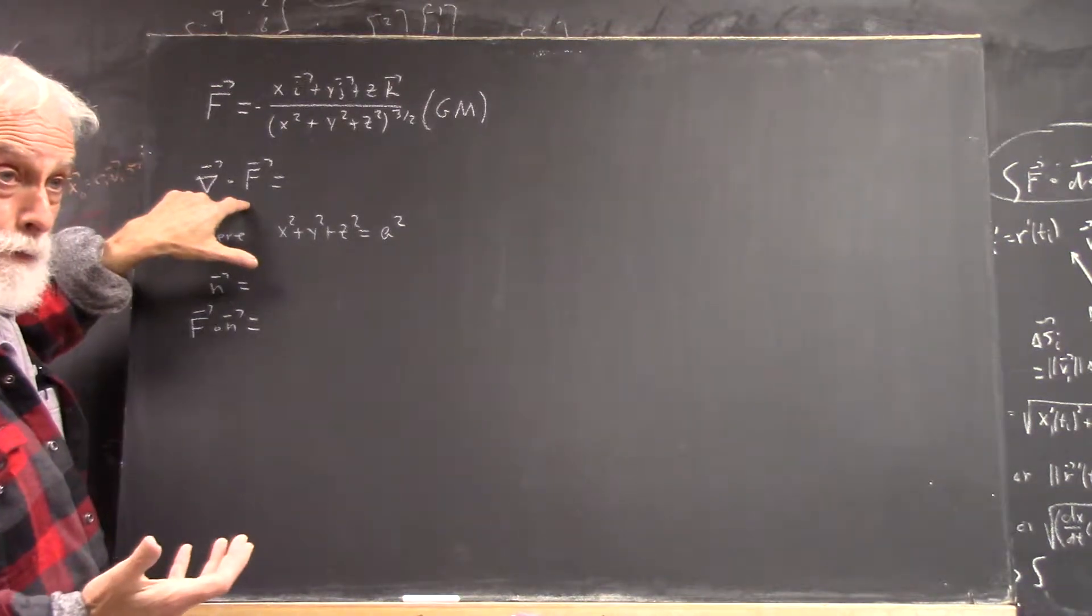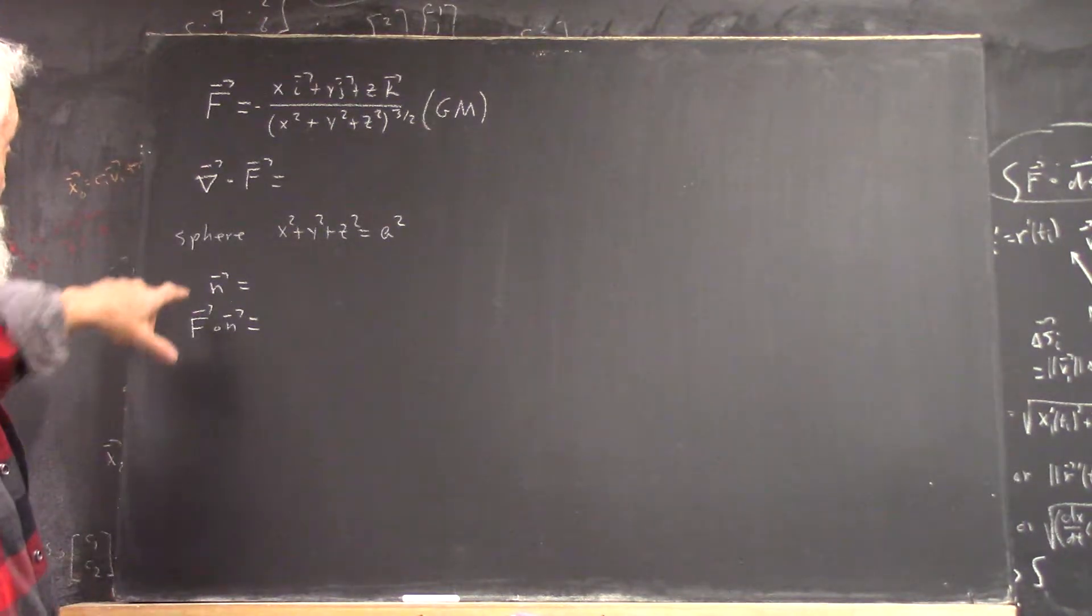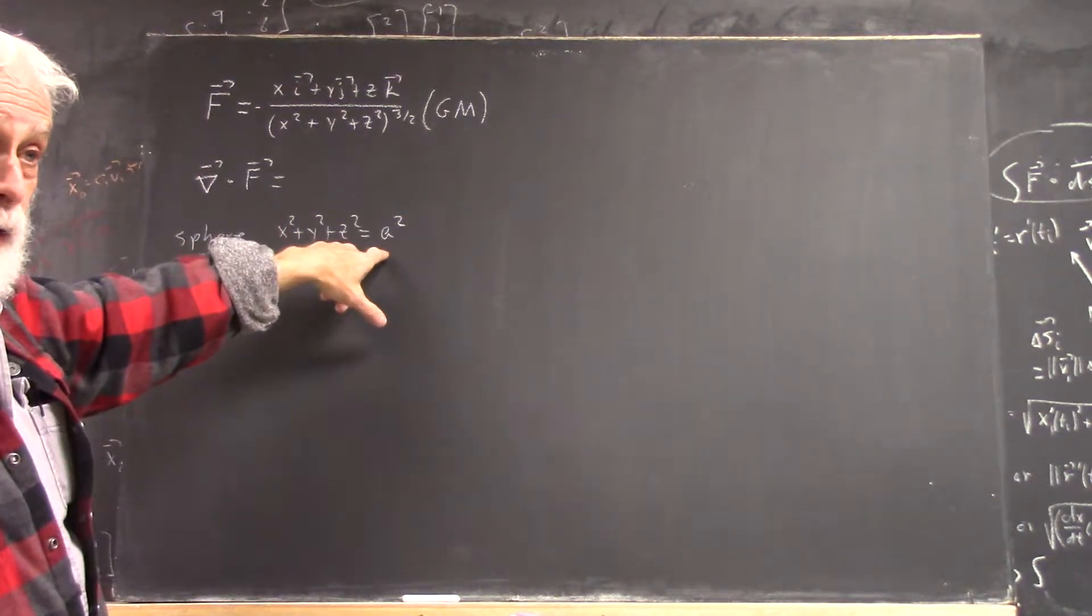And calculate your divergence. Very simple. Normal vector to this sphere, because this is a sphere of radius a.